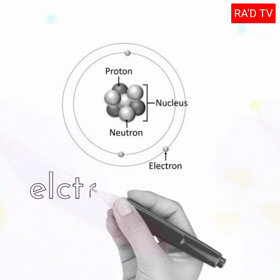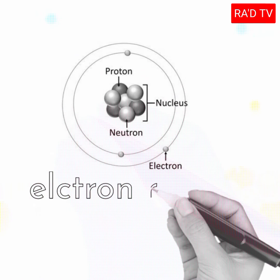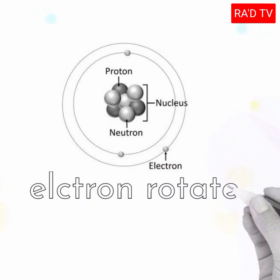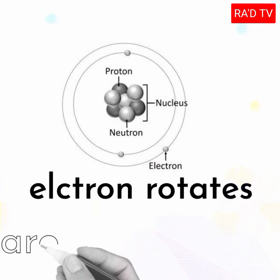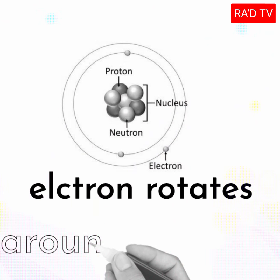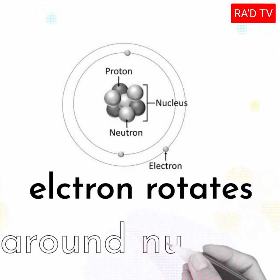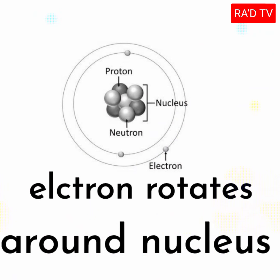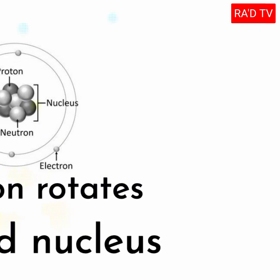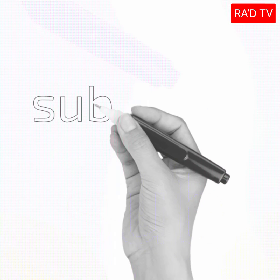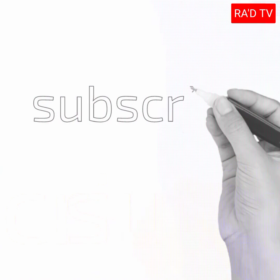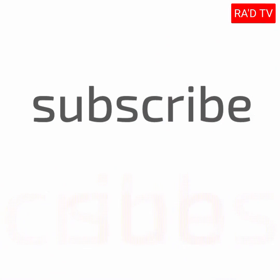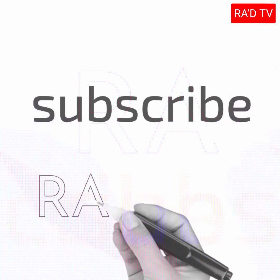The electron rotates around the nucleus. Electrons contain a negative charge. Subscribe to Raw TV for more videos.